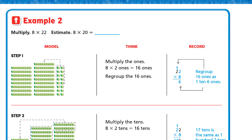Example 2: multiply 8 by 22. First, let's estimate. We round 22 to the nearest ten: to the right of the 2 we have 2, which is a weak digit, so we keep it as 20. So 8 × 20 — multiply 8 × 2 = 16 and write the zero — giving an estimate of 160.